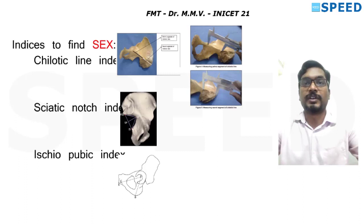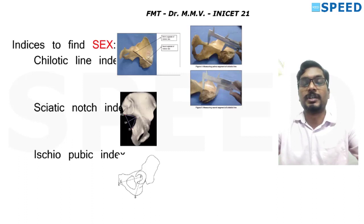Sciatic notch index is the ratio of depth to breadth of the greater sciatic notch — depth divided by breadth. The ischio-pubic index, also called the washbone index, is the length of pubis divided by the length of the ischium bone.